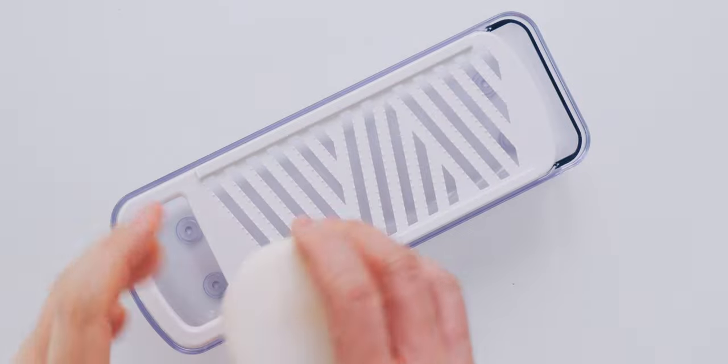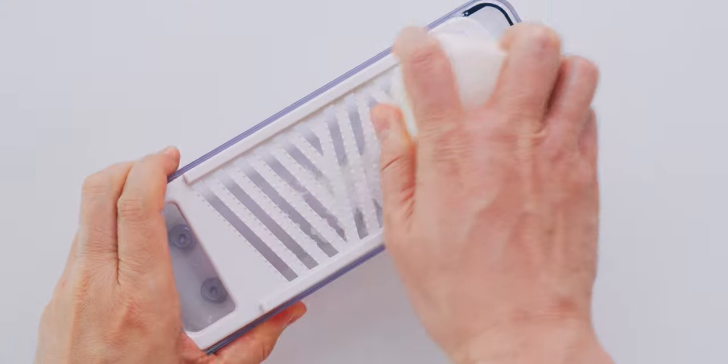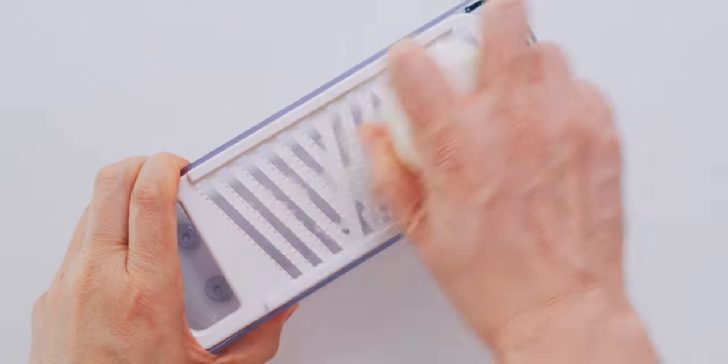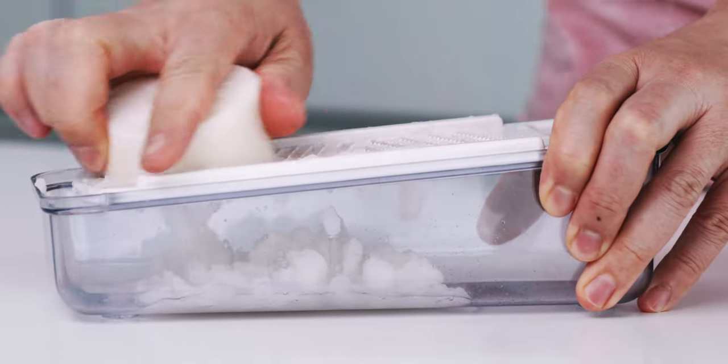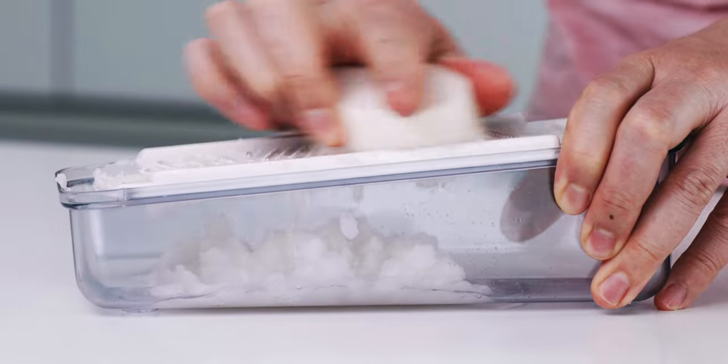Now I'm going to grate the daikon with a daikon grater. This makes it easiest because the gaps between the teeth keep them from getting clogged. If you don't have one, the rasp side of a box grater will work, or you can use a large microplane.